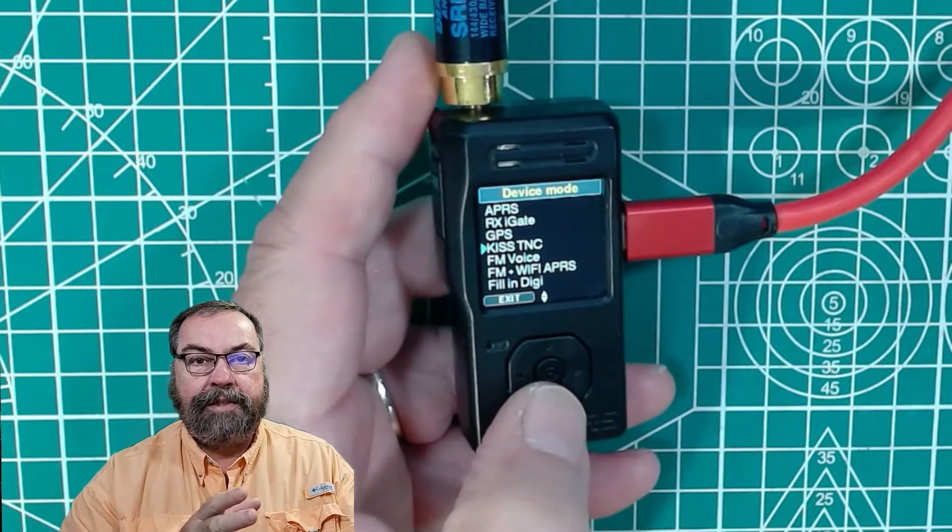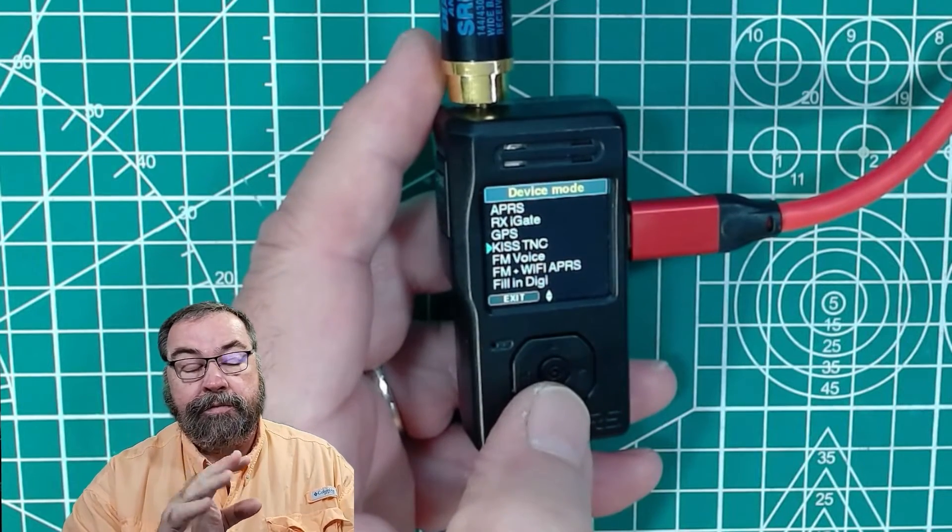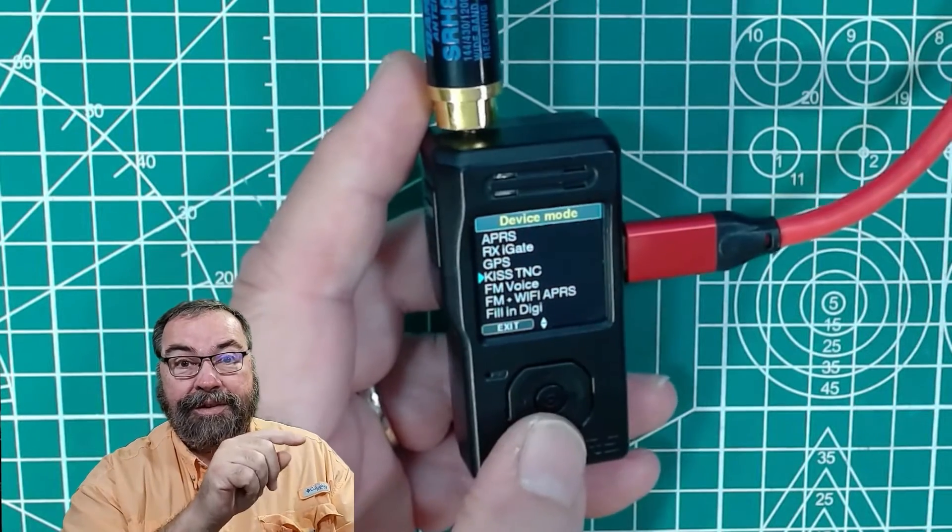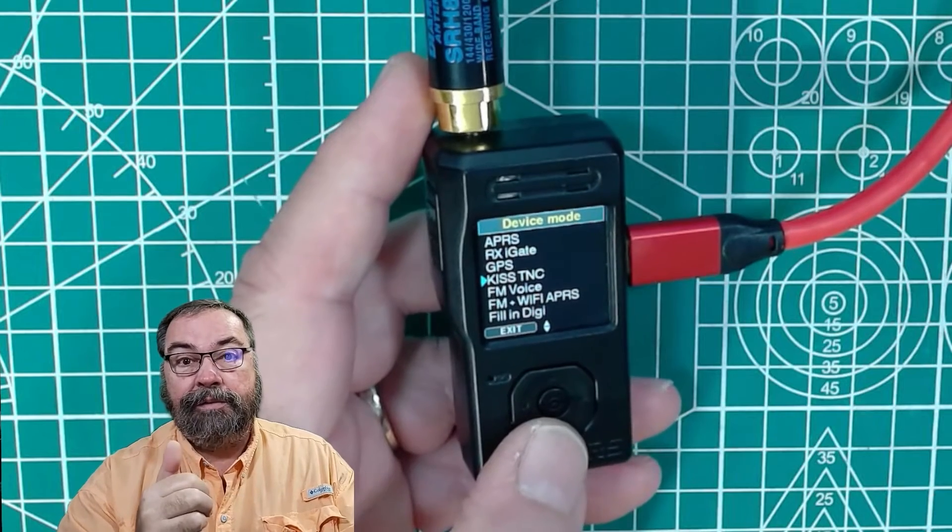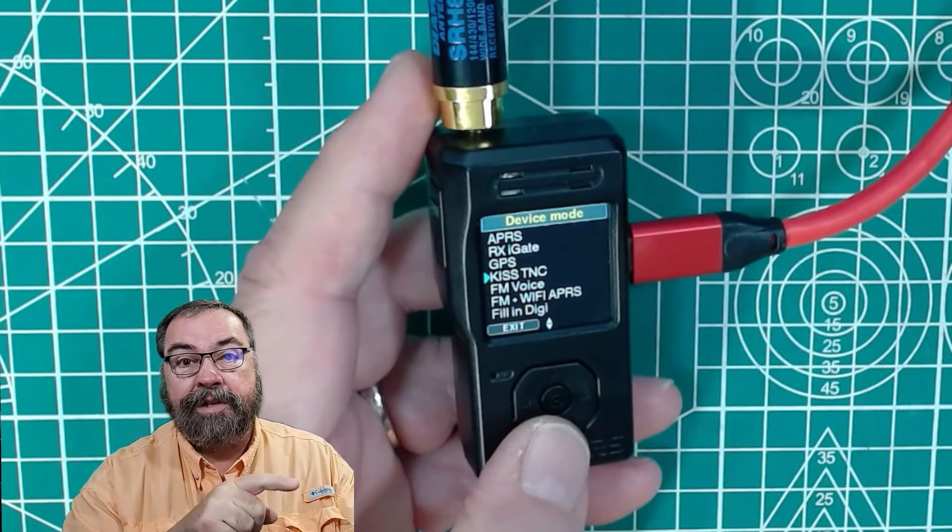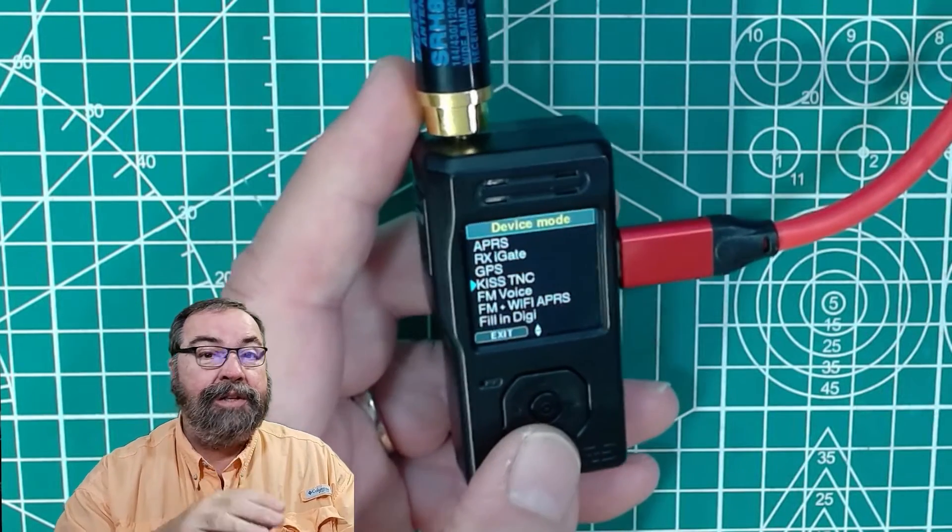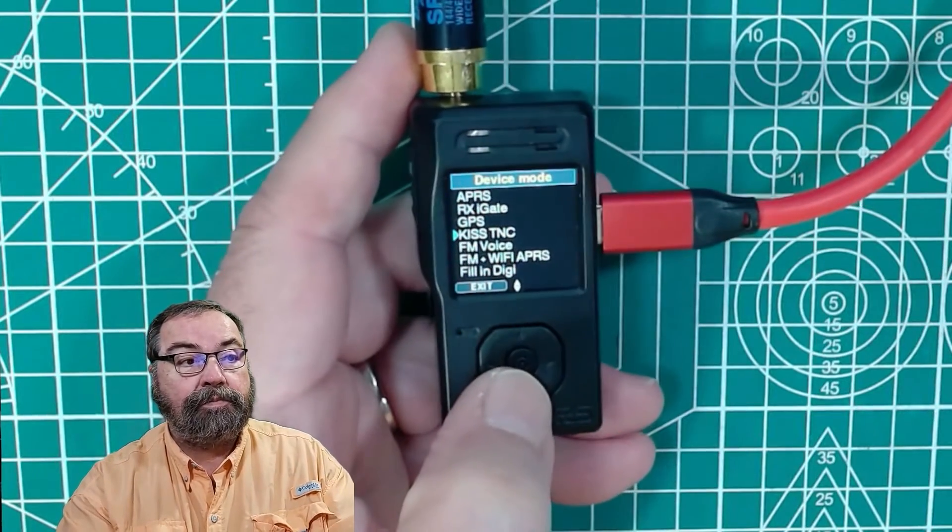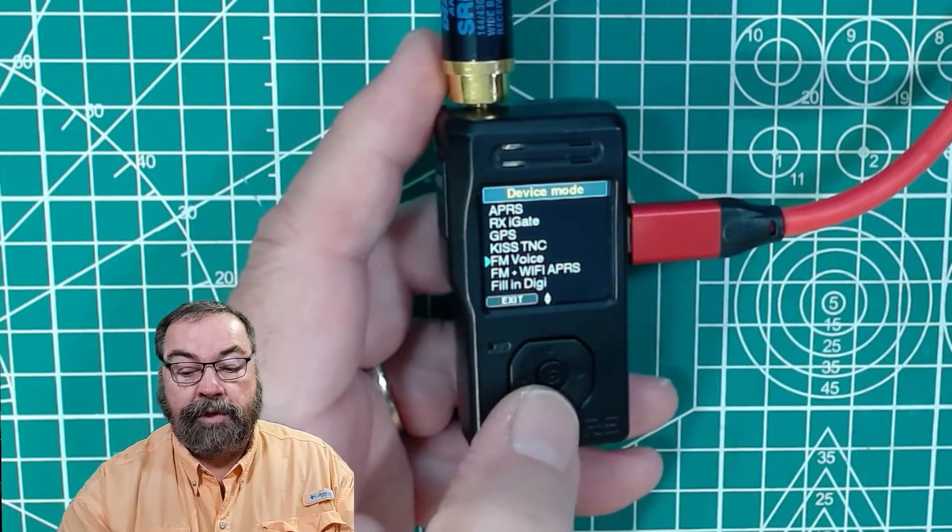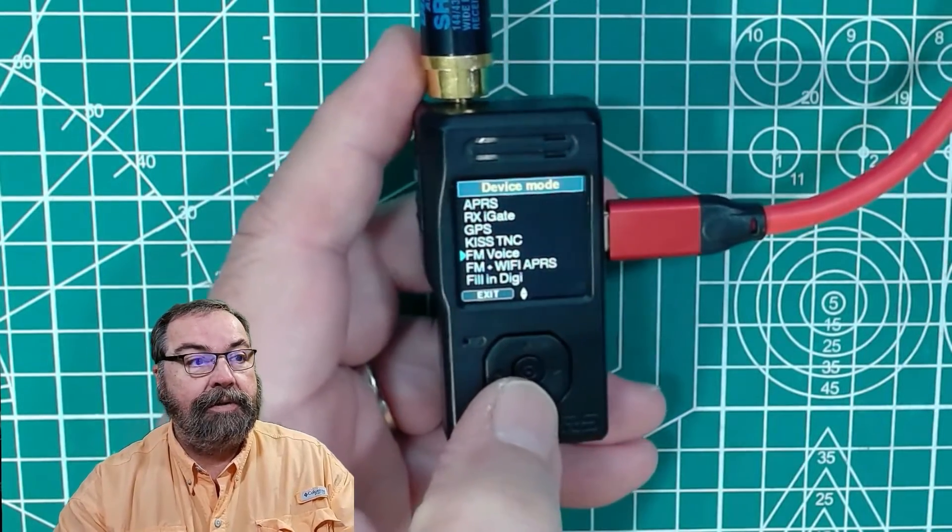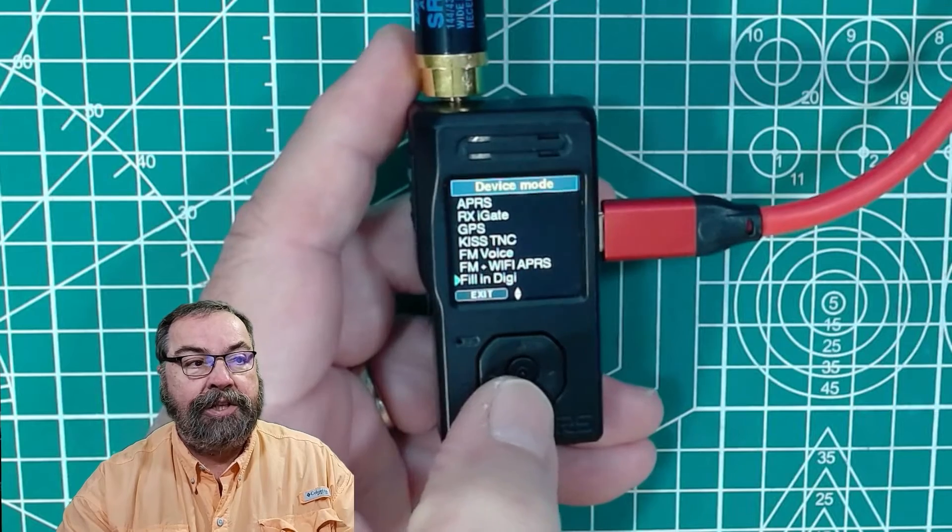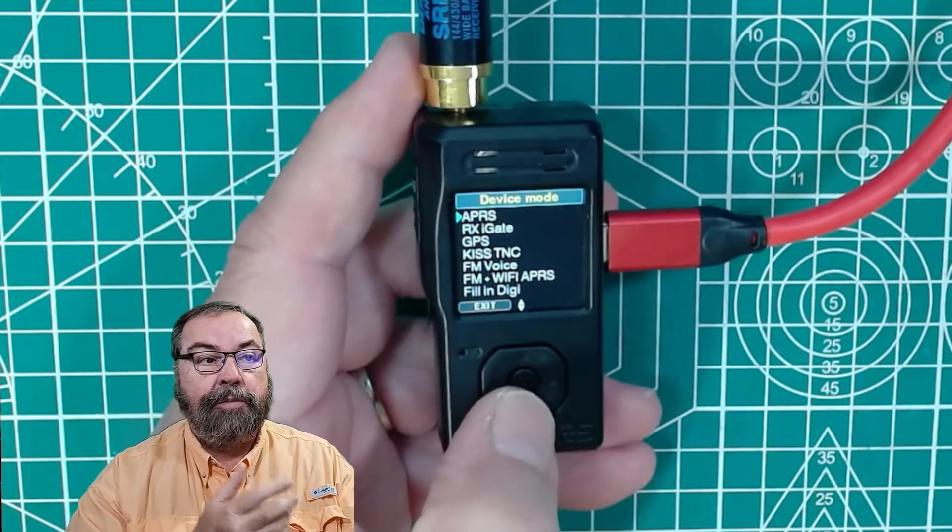We can have it perform as a KISS TNC. I have tested this. This works great on iOS, on Apple phones. There is an app called APRS.FI that will use this as its TNC. So you can absolutely beacon message, et cetera, from your phone keyboard or iPad and use this as your TNC. So that kind of gives you extended functionality over the device itself. FM voice, which is going to be like you're talking on an HT and we're going to look at that in a second. FM voice and Wi-Fi only APRS. And then of course, it will also act as a digi Peter. So those are all the functions that are built into this thing.